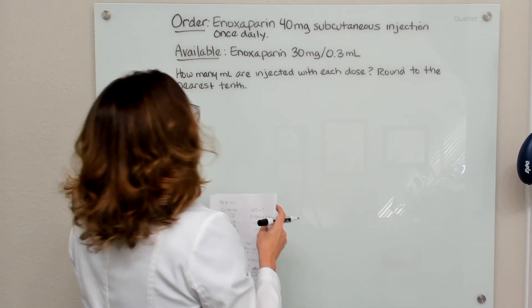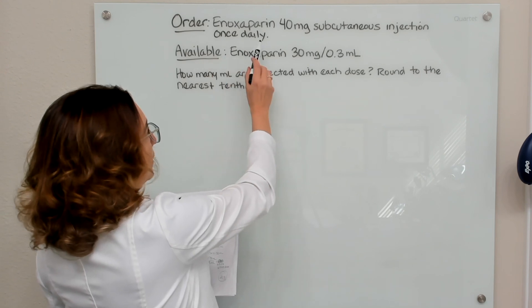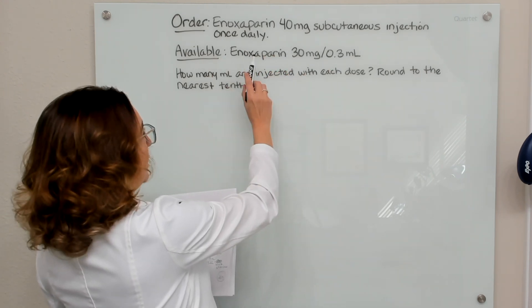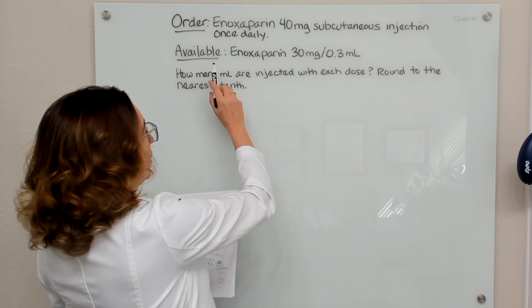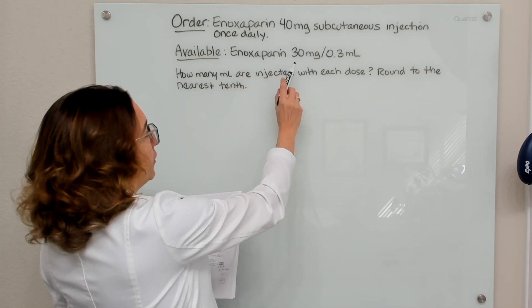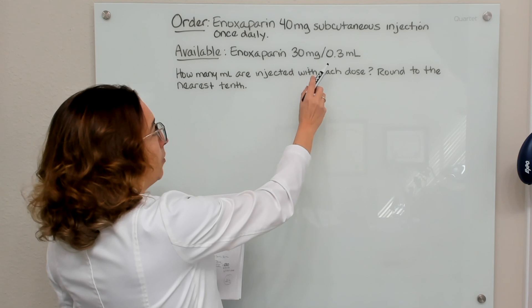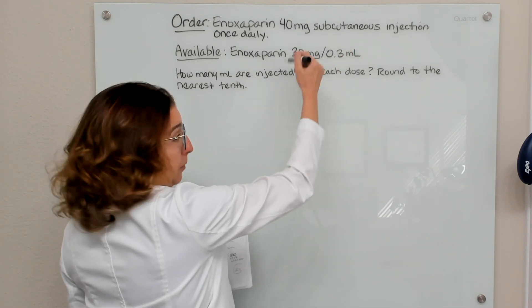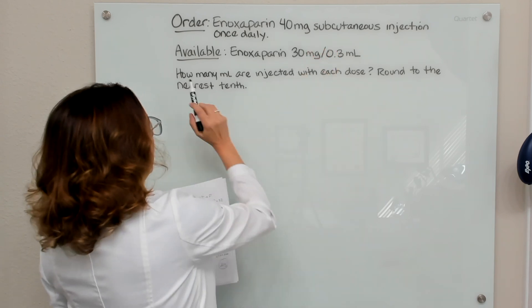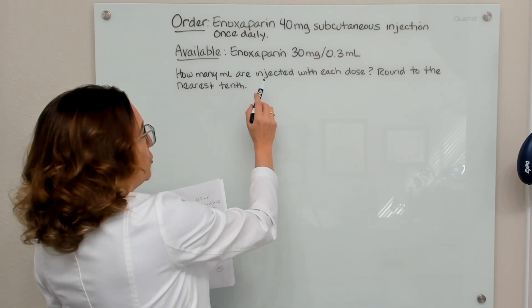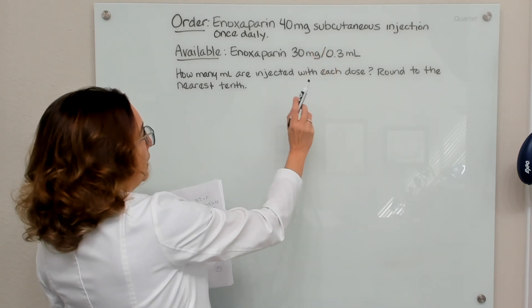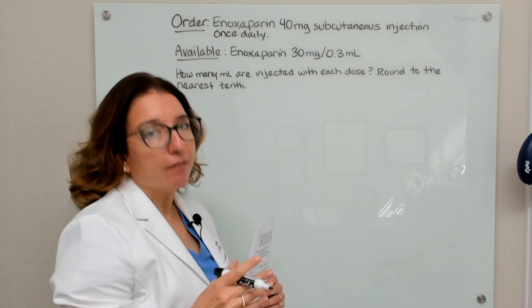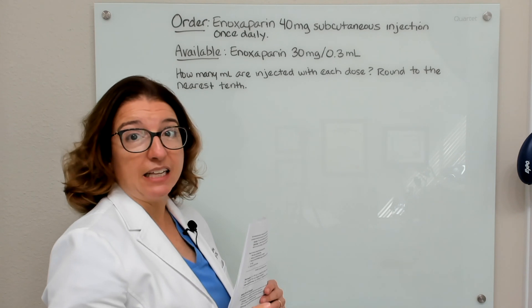In this first example problem, we have an order for enoxaparin 40 milligrams subcutaneous injection once daily, and what we have available is enoxaparin 30 milligrams in 0.3 mls of solution — that's our available concentration. We want to know how many milliliters are injected with each dose, and we need to round to the nearest tenth, so we'll want to check our rounding when we're done.